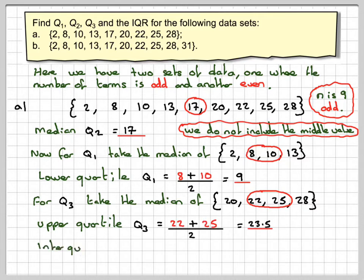Now to do the interquartile range, which is IQR, you just do Q3, the upper quartile minus the lower quartile. So it's going to be 23.5 minus 9, which gives me 14.5. So this gives you a method for doing it.